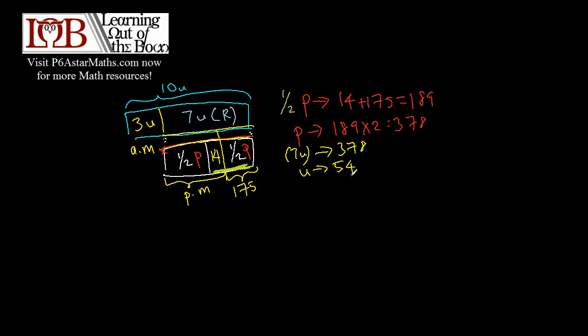How many tarts did the baker sell in the morning? And we can see that it's actually three units, so 3u is three times 54, which is equal to 162.